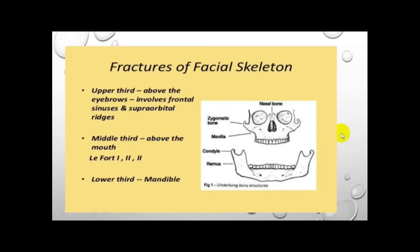This diagram shows the fractures of the facial skeleton. The upper third — above the eyebrow — involves the frontal sinuses and supraorbital ridge. The middle third is above the mouth and below the supraorbital ridge. The fractures of the middle third are called Le Fort one, Le Fort two, and Le Fort three, which we will discuss in detail in subsequent sessions.